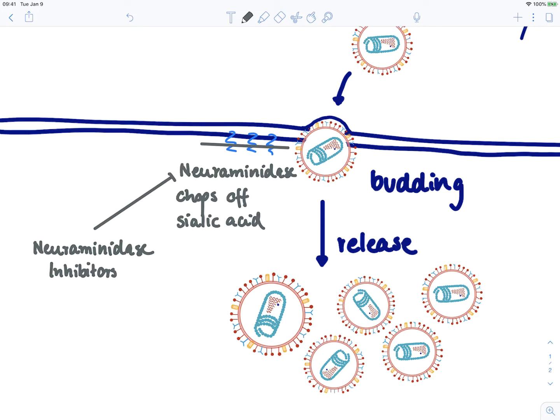This drug class are called neuraminidase inhibitors and the most famous representative is oseltamivir. There are more of them: there's also peramivir, zanamivir. They're all in 'ivir' - ivir for influenza virus. The brand name of oseltamivir is Tamiflu.